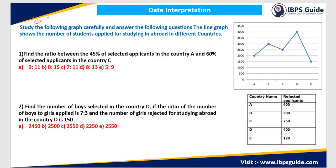The direction says: study the following graph carefully and answer the questions given. The line graph shows the number of students who have applied for studying abroad in different countries. There are basically five countries: A, B, C, D and E. In country A, there are 2000 students who have applied. In country B, 3000 have applied. Likewise, you can find the values for C, D and E.